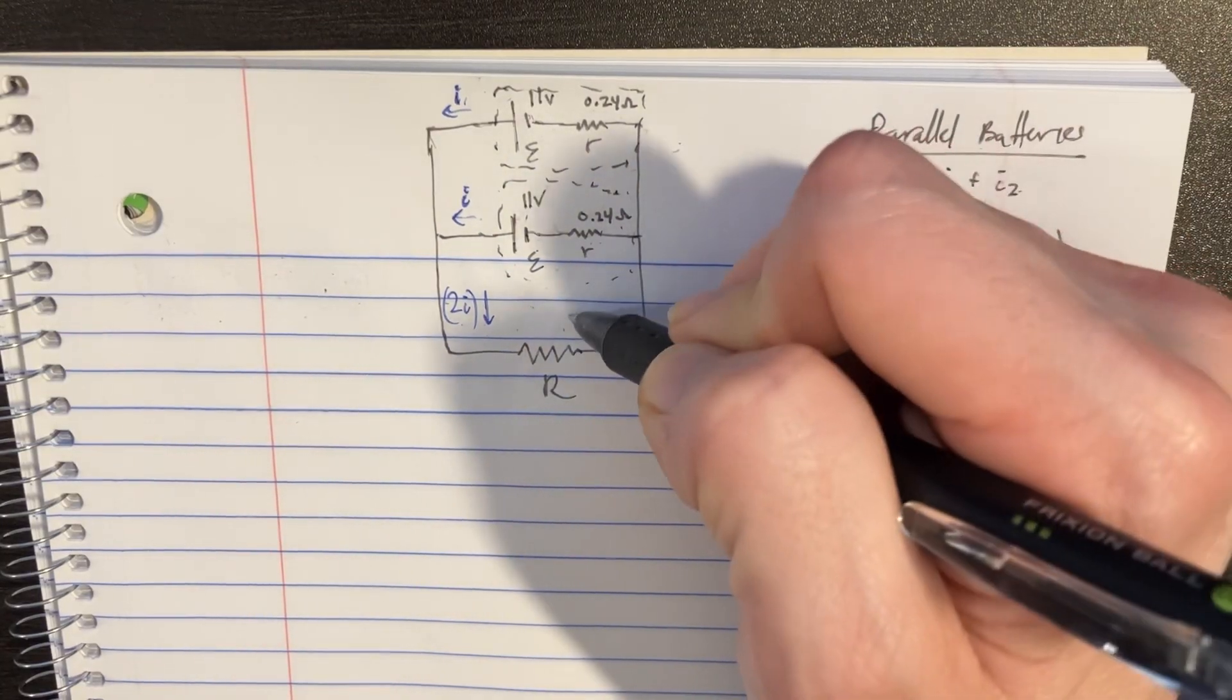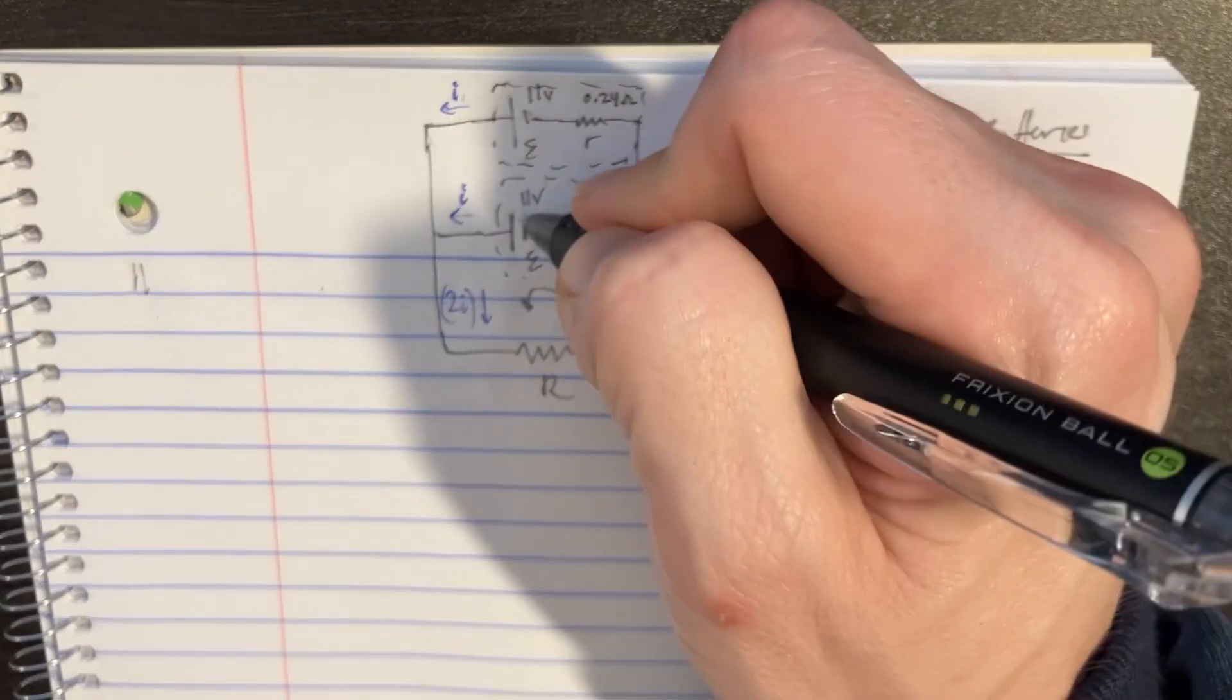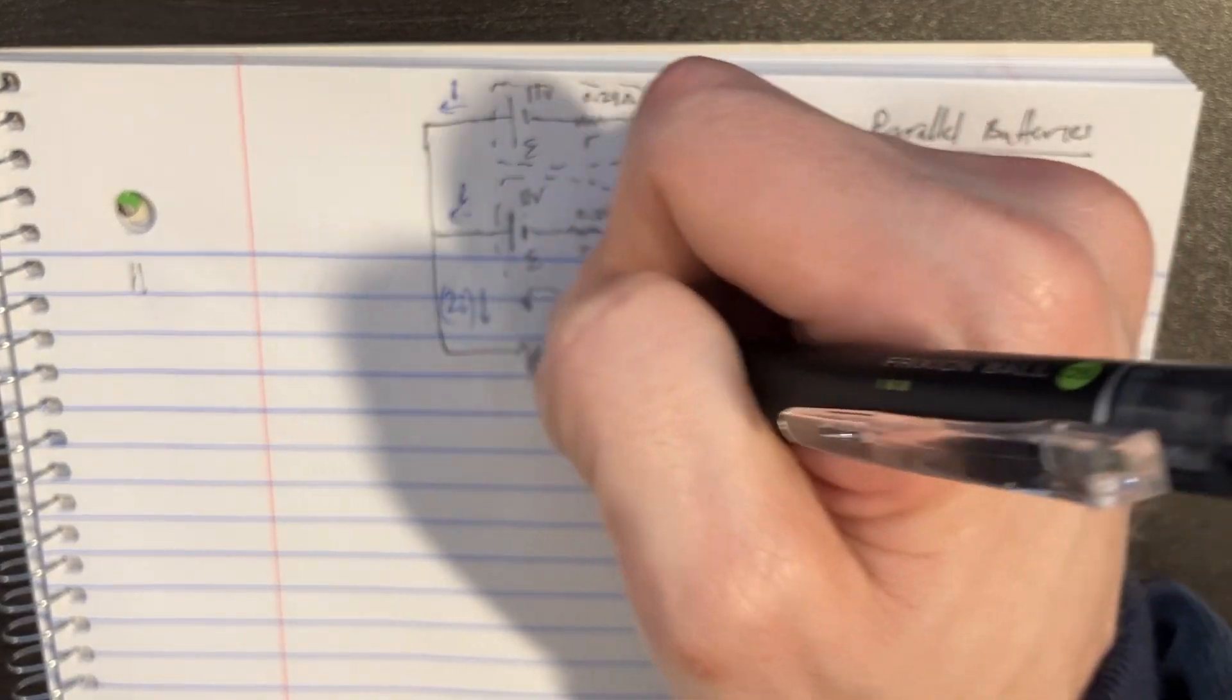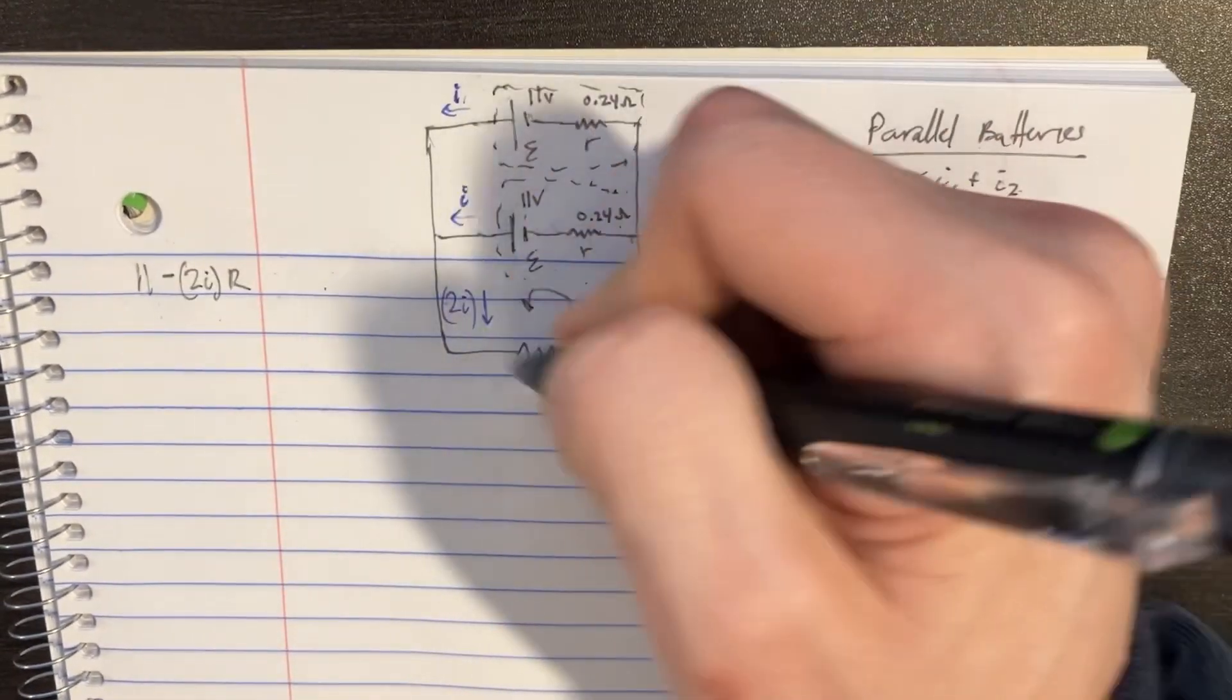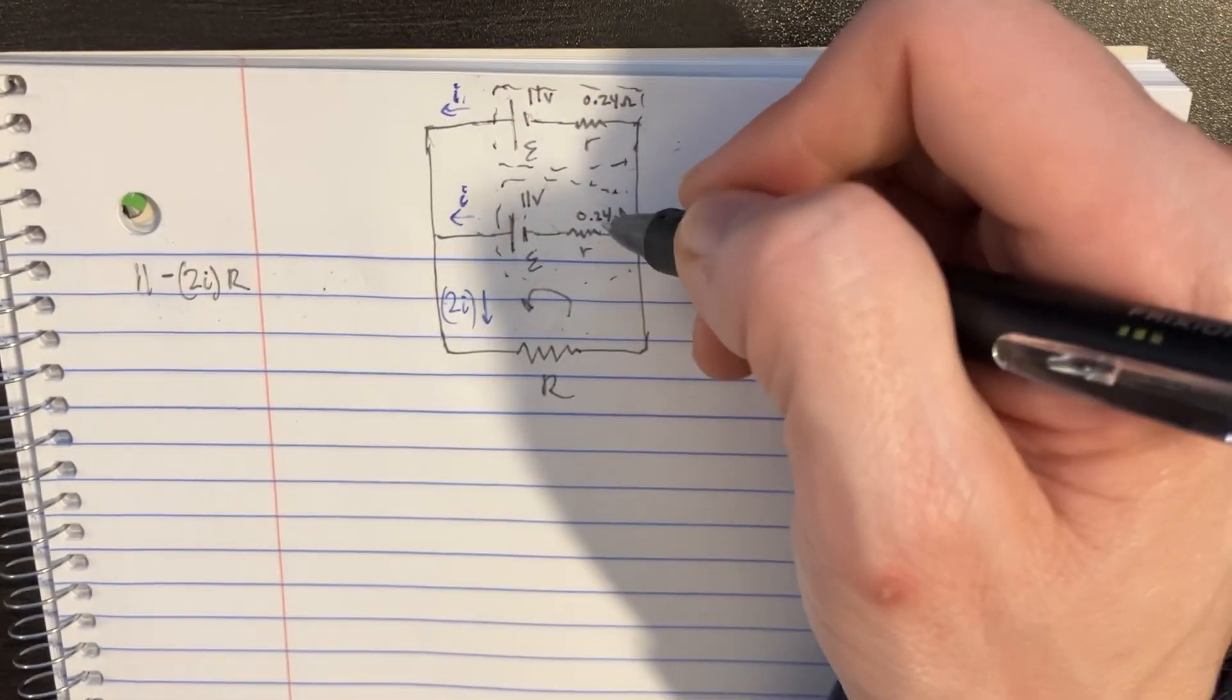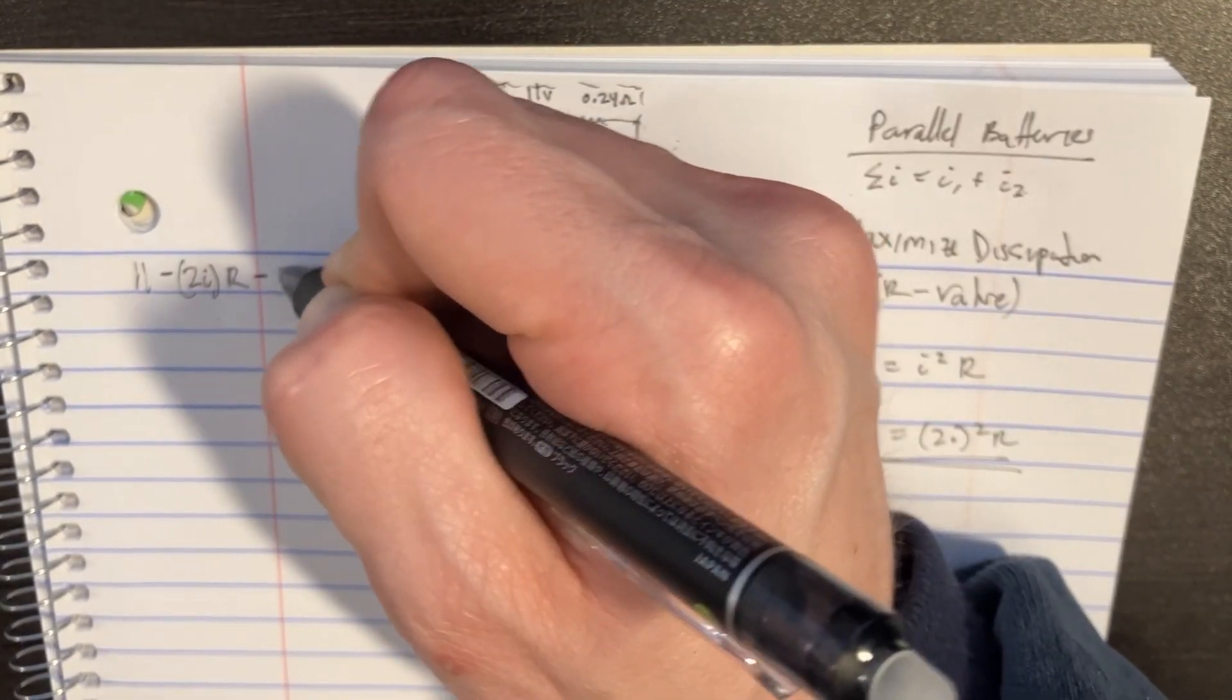So we're going to set up a Kirchhoff loop going this direction, and we'll start here with the battery at 11, and then we're going to go this way following this. We'll go minus 2i times the r right there, and we'll come through here, and then we'll just go minus 0.24 times the i minus 0.24.